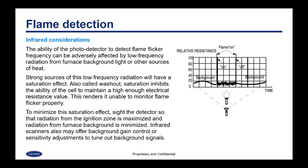The ability of the photo detector to detect flame flicker frequency can be adversely affected by low frequency radiation from furnace background light or other sources of heat. Strong sources of this low frequency radiation will have a saturation effect, also called washout — saturation inhibits the ability of the cell to maintain a high enough electrical resistance value, rendering it unable to monitor flame flicker properly. To minimize this, sight the detector so that radiation from the ignition zone is maximized and radiation from furnace background is minimized. Infrared scanners may also offer background gain control or sensitivity adjustments to tune out background signals. Narrowing the field of view to the flame you need to see can mitigate a lot of that background radiation.